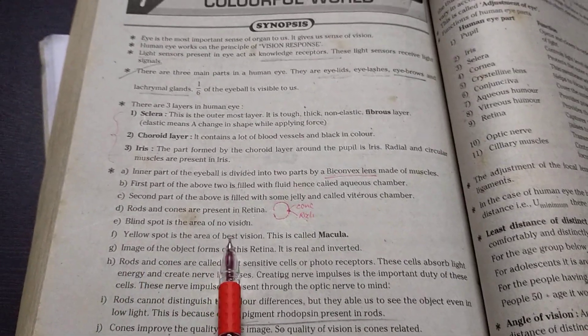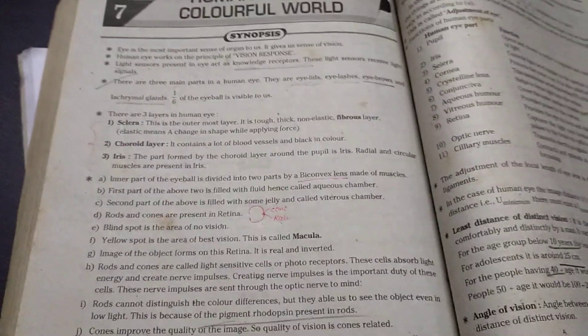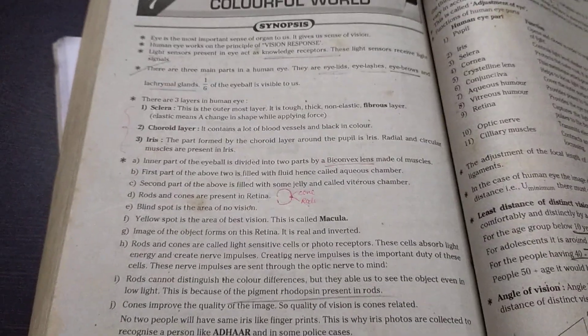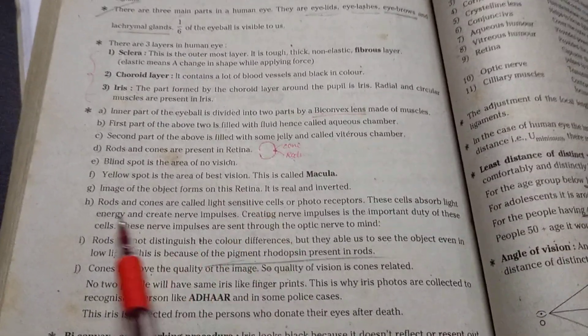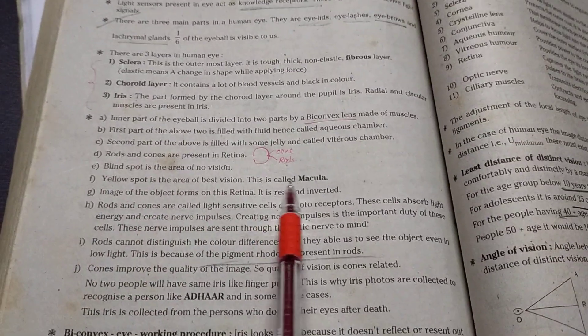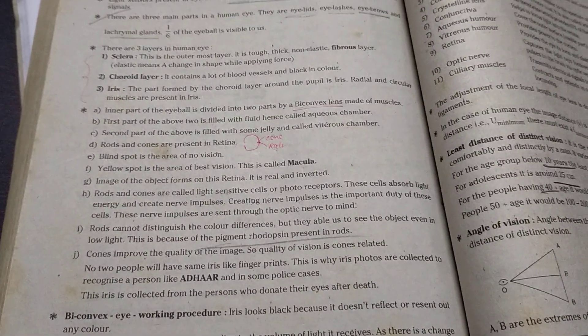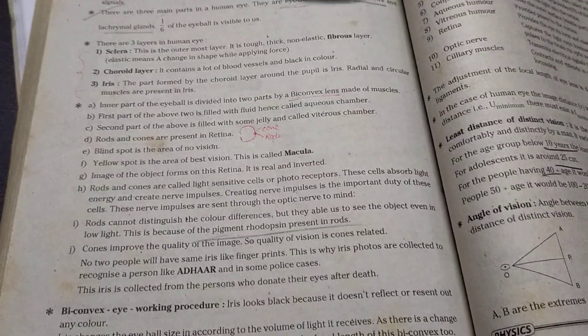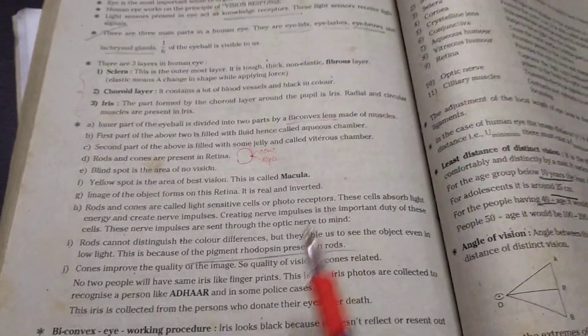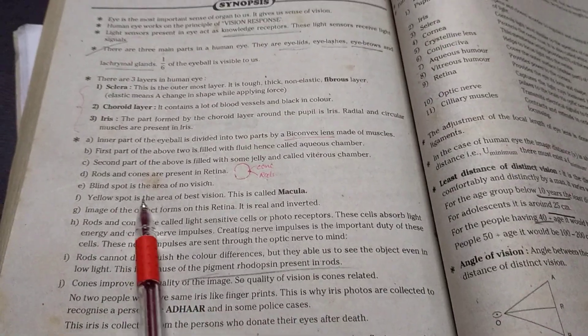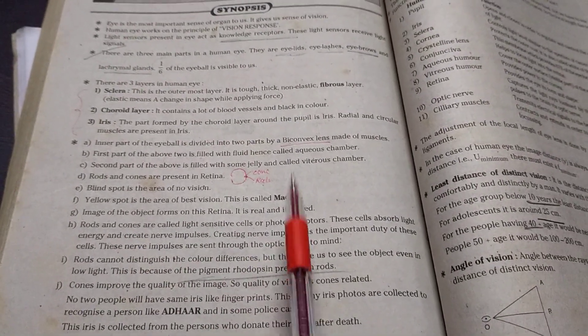I think so you get clarity and blind spot is the area of no vision. So you know eye also they have some blind spot. There is no vision in it. So every eye consists in it. Yellow spot is the area of best vision. This is called macula. So the yellow spot in the area of the best vision is called the macula.